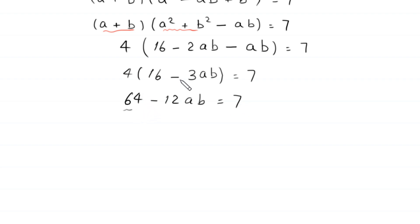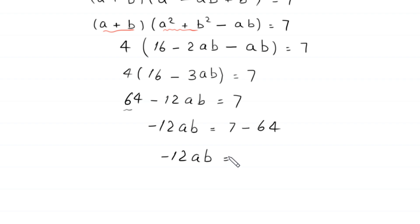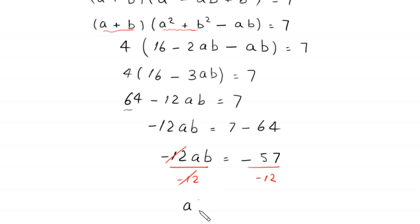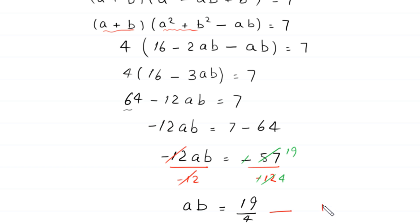Distributing the 4, this becomes 64 minus 12ab is equal to 7. Moving 64 to the right hand side gives negative 12ab is equal to 7 minus 64, which is negative 57. Dividing both sides by negative 12, we get a times b is equal to 57 over 12, which simplifies to 19 over 4. Let us call this equation 4.